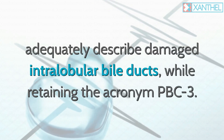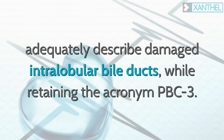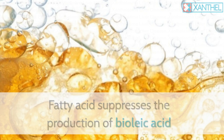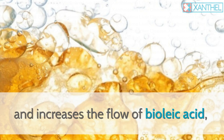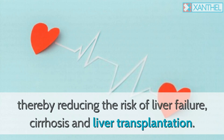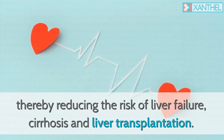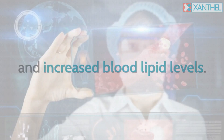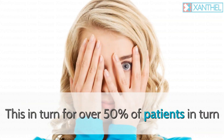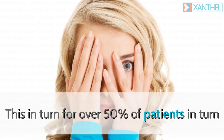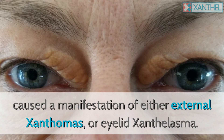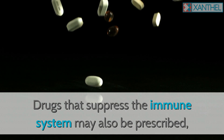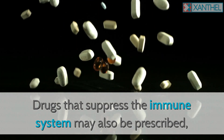Cirrhosis was replaced by cholangitis to adequately describe damaged intralobular bile ducts while retaining the acronym PBC. Obeticholic acid suppresses the production of bile acid and increases its flow, thereby reducing the risk of liver failure, cirrhosis, and liver transplantation. Side effects of obeticholic acid include increased itching and increased blood lipid levels, which in turn caused a manifestation of either external xanthomas or eyelid xanthelasma in over 50% of patients.